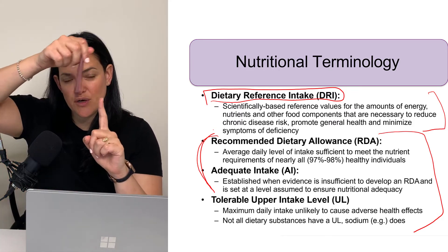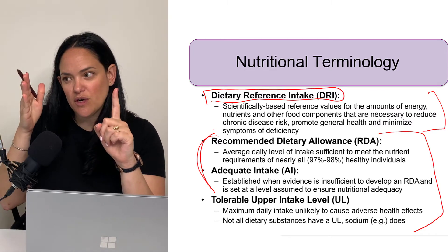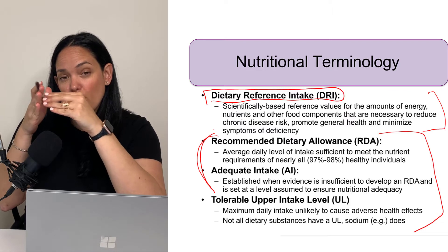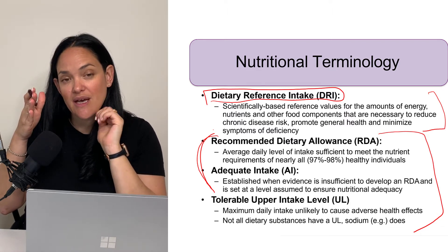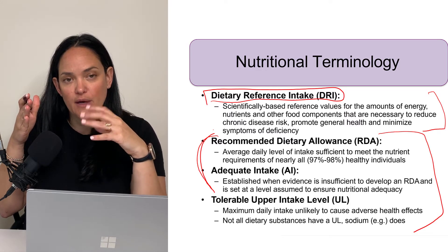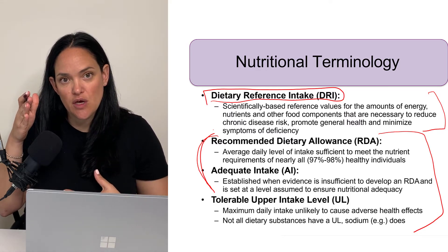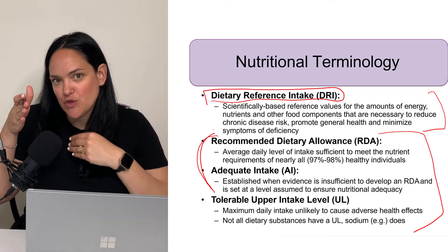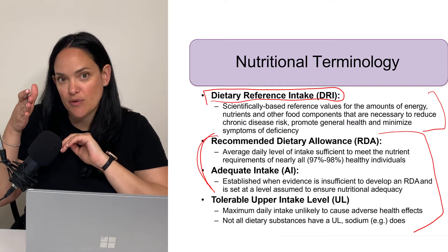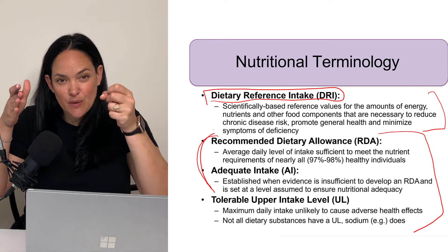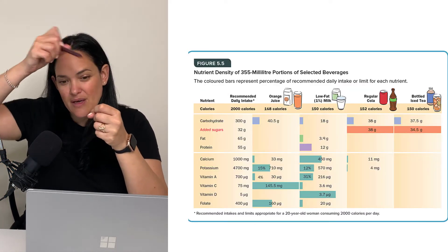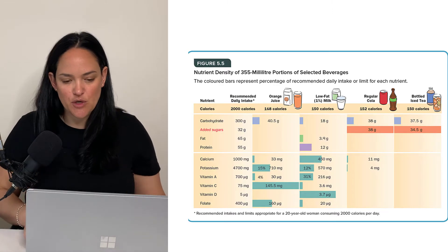We also want to know not just if you're getting enough, but if you're getting too much. For instance, if we consistently consume more sodium than we need, that puts us at a higher risk of things like high blood pressure or certain intestinal issues. So we want to know beyond which level is too much — that's the upper limit, or more specifically the tolerable upper limit. We want to make sure people are getting enough, but not too much.